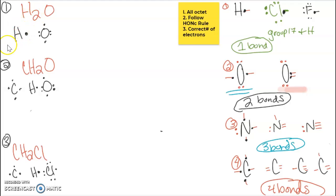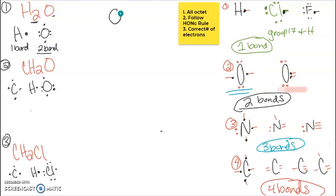First we're going to start with water. H₂O has two hydrogen and one oxygen, since there's no number listed. Hydrogen has one valence; oxygen has six total. Hydrogen is going to want one bond and oxygen is going to want two bonds. We need to figure out our central atom, which is the one with the most bonds — so oxygen will be in the center with the hydrogens on the outside.